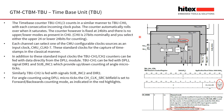TBU channels 1 and 2 count in a similar manner to channel 0 with each consecutive incoming clock pulse, and the counter automatically rolls over when it saturates. However, the counter is fixed at 24 bits with no upper or lower modes as in channel 0. In addition to the standard input clocks, TBU channels 1 and 2 counters can be fed directly with DPLL data. Channel 1 can be fed with direction and sub-increment signals, providing up and down counting for angle micro ticks.